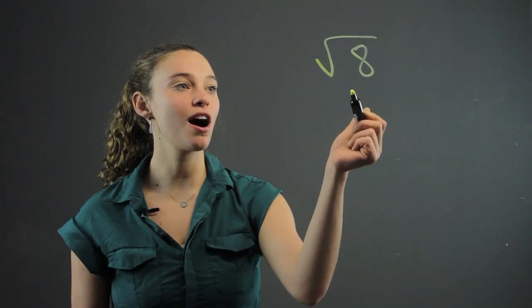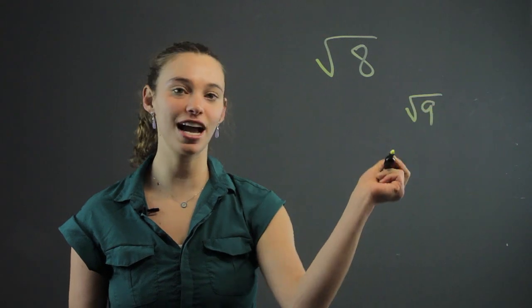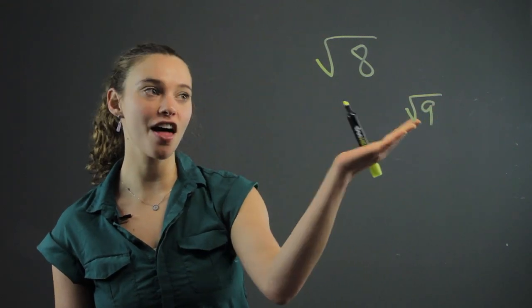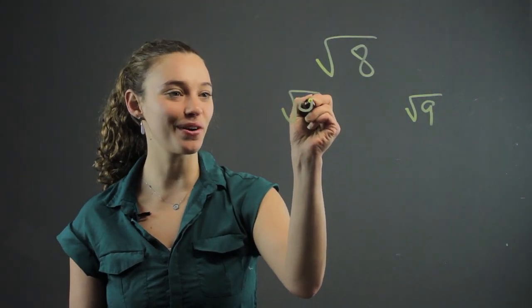So let's look at 8. Well, the number we know that's closest to that is square root of 9. That's the closest perfect square, and the closest perfect square on the other side, less than 8, is going to be square root of 4.